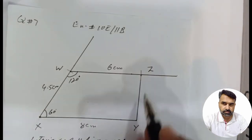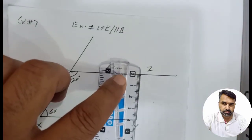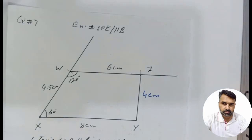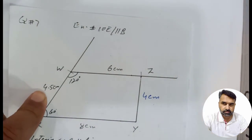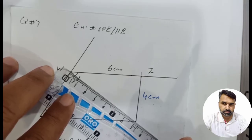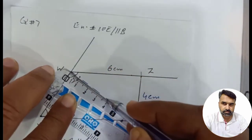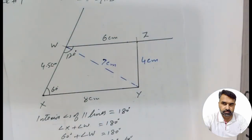Now they have said to measure and write down YZ. Students, measuring YZ gives 4 cm. And WY — we have to measure WY as well. Placing the ruler from 0 to W, WY is 7 cm. So we measure both diagonals and sides that were not given as requirements in the construction.